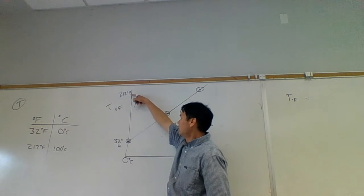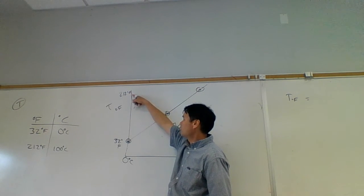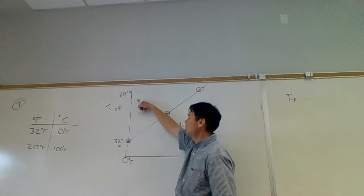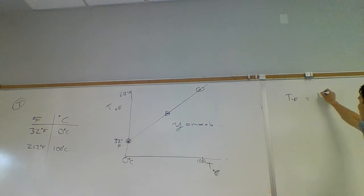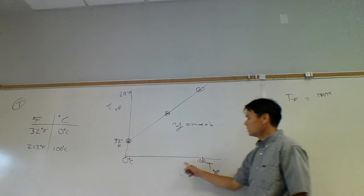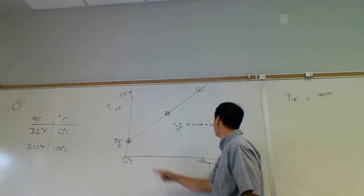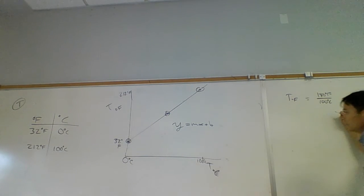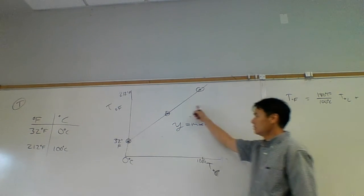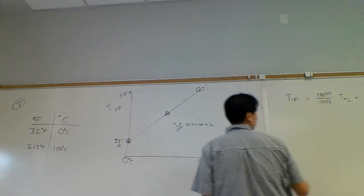Well, it's delta y. So that's temperature final minus temperature initial. 212 minus 32. 212 minus 32 is 180 degrees Fahrenheit. That's my delta y. What's my delta x? 100 minus 0 is 100 degrees C times my x. My x is going to be temperature in degrees C plus the intercept. The intercept is 32 degrees Fahrenheit.